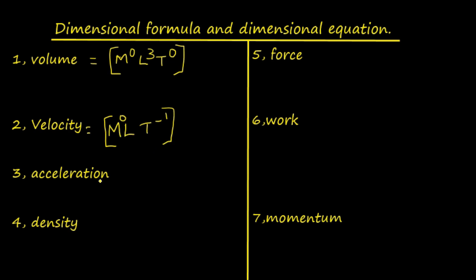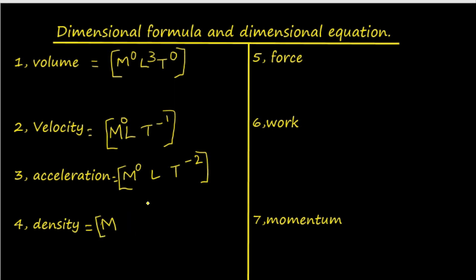Acceleration is rate of change of velocity, that is V divided by T. Using the expression for velocity and dividing by T, there is one more T in the denominator, so it becomes T raised to −2. The dimensional formula is M raised to 0, L, T raised to −2. Density is mass divided by volume, so it is represented as M, L raised to −3, T raised to 0. A dimension raised to 0 means that physical quantity is independent of that dimension.